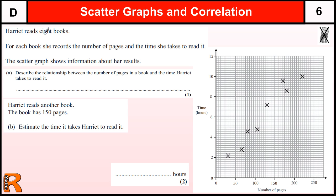Okay, in this question we've got Harriet reading eight books, and those points of data are recorded on this graph. So the number of pages across the bottom and the time it takes her to read it at the side. So you would expect the smaller number of pages, the quicker that she reads the book.